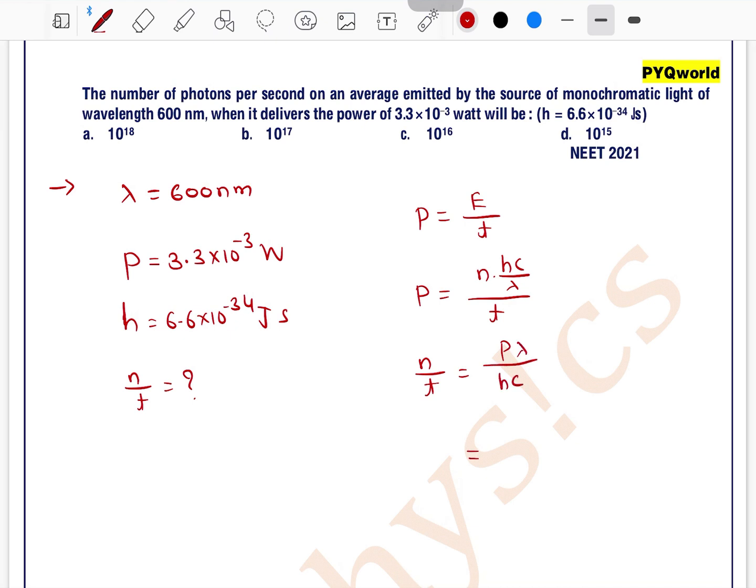So, power given is 3.3 means 33 into 10 to the power minus 4, lambda is 600 nanometer, 6 into 10 to the power minus 7, divided by h is 6.6 means 66 into 10 to the power minus 35 and c is 3 into 10 to the power 8.